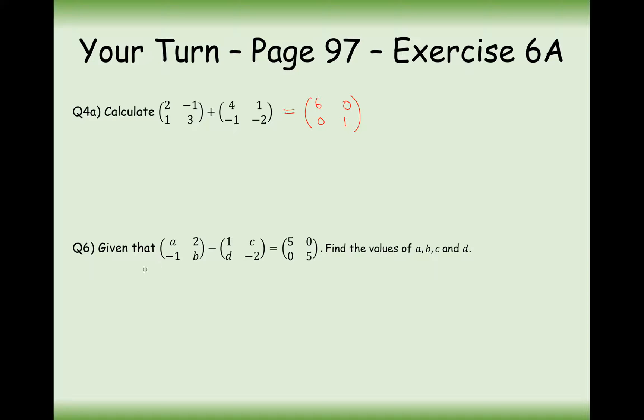Question 6 here is given that we have a calculation. Find the value of A, B, C, and D. We're looking at the top left-hand cells. We've got A minus 1 equals 5. So therefore, A must equal 6. Now, looking at the top right-hand values, 2 minus C equals 0. So therefore, C must equal 2.